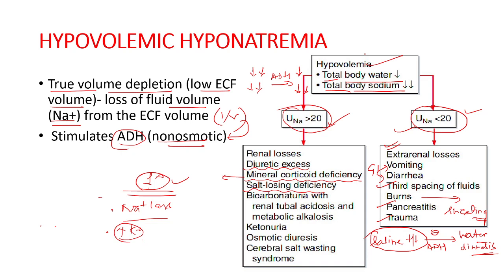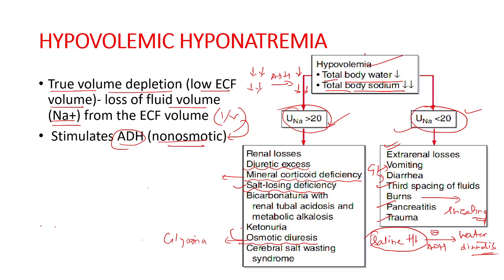Osmotic diuresis is another renal cause of hypovolemic hyponatremia. Causes include glycosuria in diabetes mellitus, ketonuria in starvation, diabetic or alcoholic ketoacidosis, and bicarbonaturia in renal tubular acidosis and metabolic alkalosis. Bicarbonate excretion drags sodium along with the negatively charged bicarbonate ions, causing renal sodium loss.